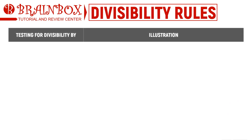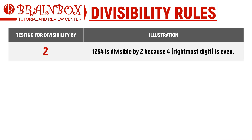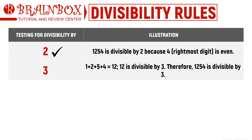To answer this question, let's start from 2 and work our way up to 10. Testing for divisibility by 2, we look at the rightmost digit: 4. Since 4 is even, 1,254 is divisible by 2. The sum of the digits of 1,254 is 12, and since 12 is divisible by 3, we can conclude that 1,254 is also divisible by 3.